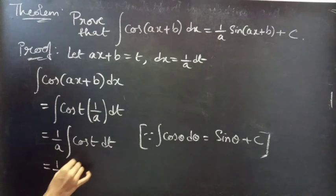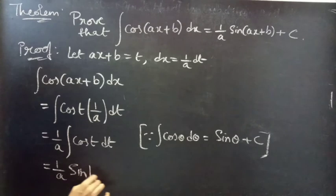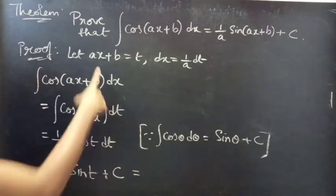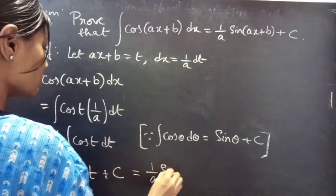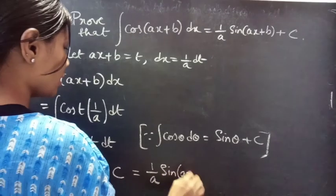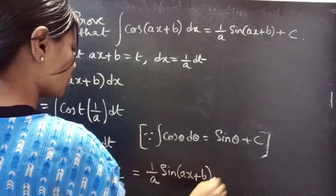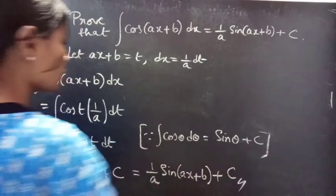This becomes integral cos t equals to sin t plus integral constant C. Now, replace t by ax plus b. We'll get 1 by a into sin(ax+b) plus integral constant C.